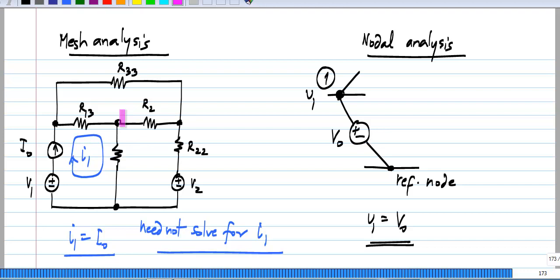So, the mesh analysis for planar circuits is analogous to nodal analysis in a lot of ways. The easiest case for nodal analysis is to have only resistors and independent current sources. The easiest case for mesh analysis is to have only resistors and independent voltage sources. In nodal analysis, when you have an independent voltage source, you form a super node by combining two nodes. In mesh analysis, you form a super mesh by combining two meshes. If you have a chain of voltage sources in nodal analysis, you may have to combine more than two nodes into a super node. Similarly, in mesh analysis, if you have current sources in many branches, you may have to form a super mesh combining more than two meshes.